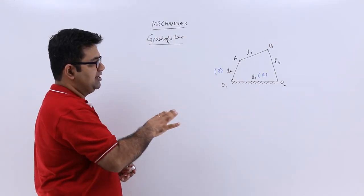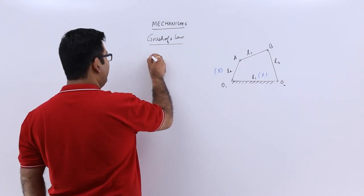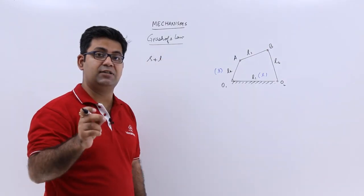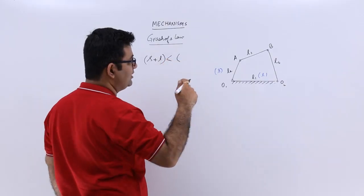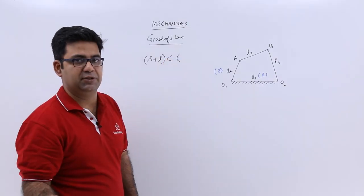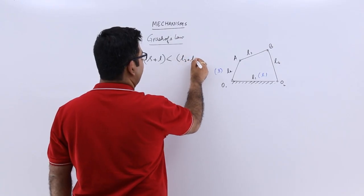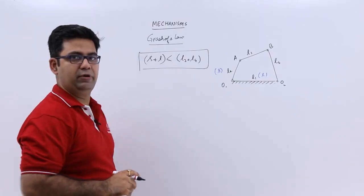For a 4-bar chain, as per Grashoff's law, the sum of the length of the smallest and the largest link should be less than the sum of the length of the remaining two links. In this case, it will be l3 plus l4. So this is Grashoff's law for a 4-bar chain.